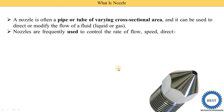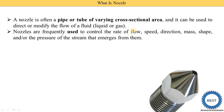Nozzles are frequently used to control the rate of flow — meaning the quantity of fluid, either liquid or gas — as well as the speed, direction (the angle at which the jet comes out), mass, shape, and pressure of the stream that emerges from them. The stream is the flow coming out from the nozzle, and these are the parameters we are controlling.